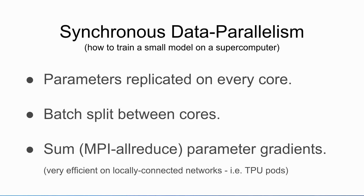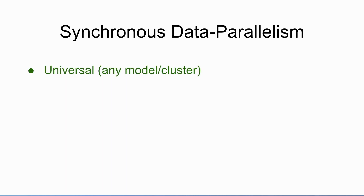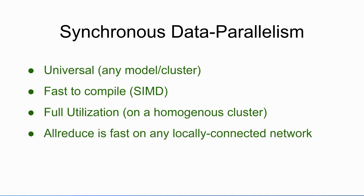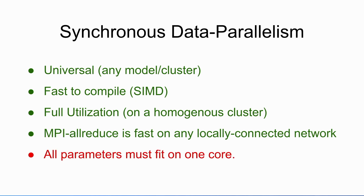Let's look at what works really well with data parallelism. The way we do data parallelism on our TPU pods is: you replicate the parameters on every core, split the batch across all the cores using a giant batch, run the forward pass, run the backward pass, add up the gradients across all the cores, put the result everywhere, and do the updates everywhere. This works really well because the only communication is an MPI all-reduce, which happens to be really fast on locally connected networks. Data parallelism is universal and fast to compile — you write one program and run the same program on every processor. You get full utilization since everyone's doing the same thing. Unfortunately, you have to fit all the parameters on every core, so that's not going to work for giant models.